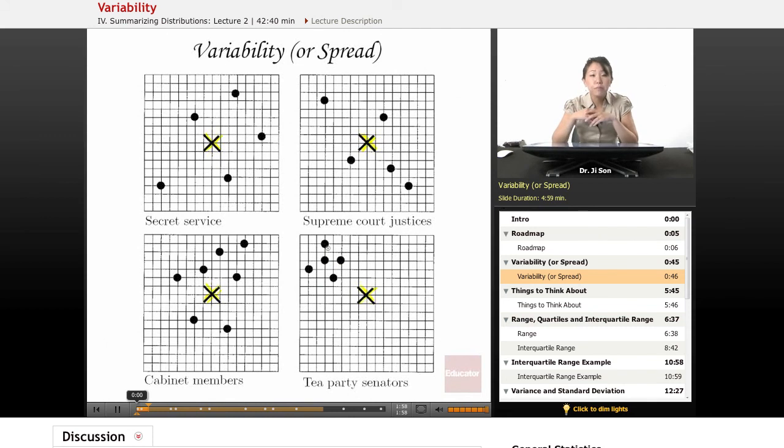Now, which of these groups of people is sort of most spread out from the president? Which of these groups of people is sort of closest in? Who's closest to the president? Can we describe that with a number?